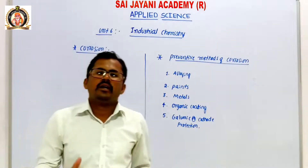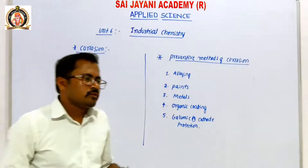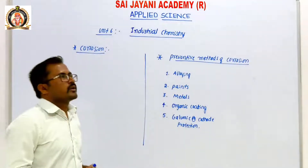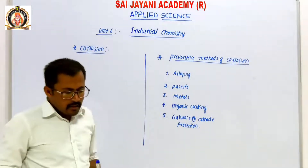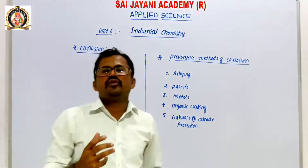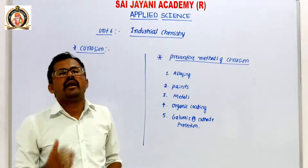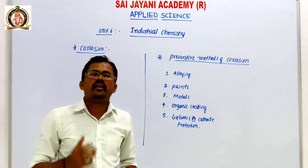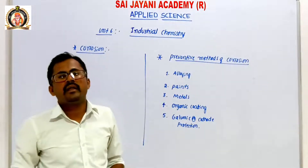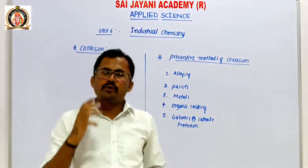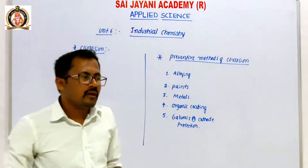Next concept: Corrosion. So what is corrosion? Corrosion means the gradual destruction of material under the action of environmental or atmospheric effect.